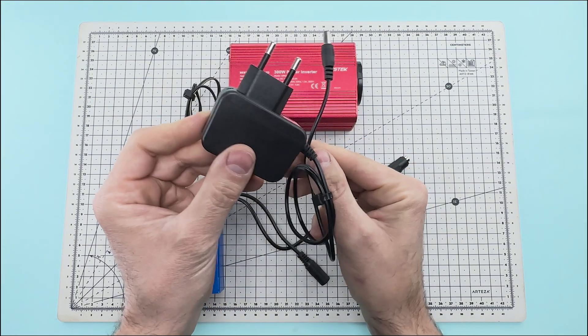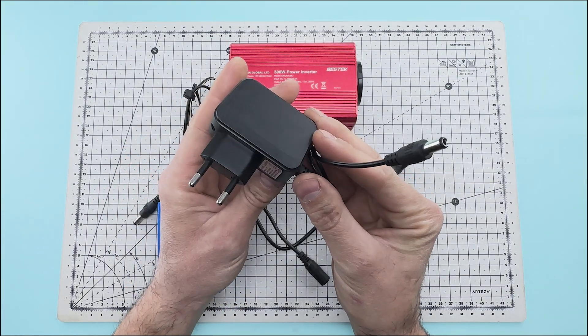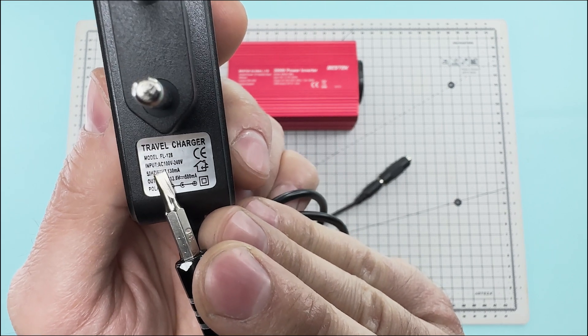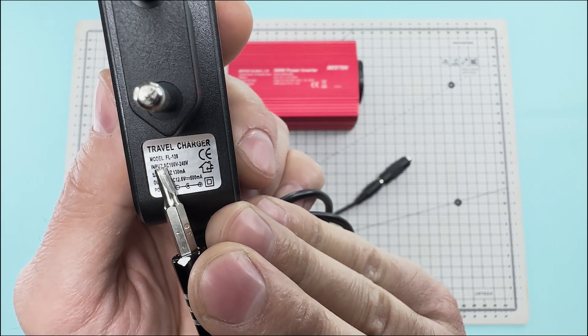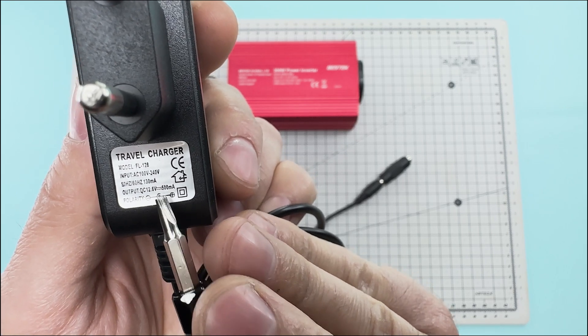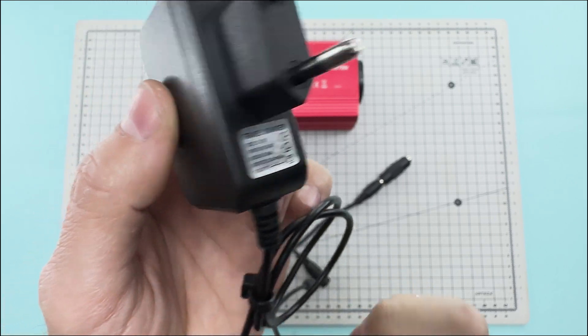This is the power supply we will use to charge the battery. This power supply operates at 220 volts of alternating current and a frequency of 50 hertz, and it has an output connector that provides a direct current of 12 volts.